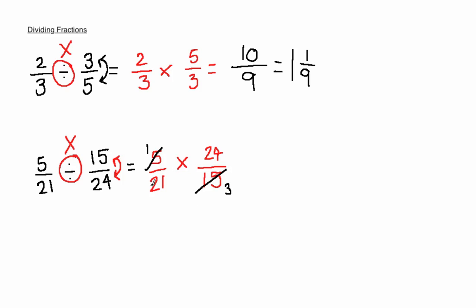Similarly you can now divide the 21 and the 24 here by 3. 21 divided by 3 is 7. 24 divided by 3 is 8.